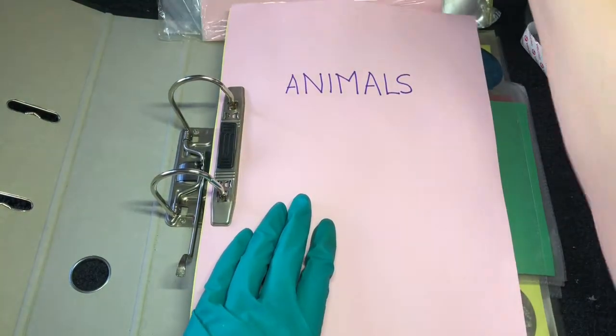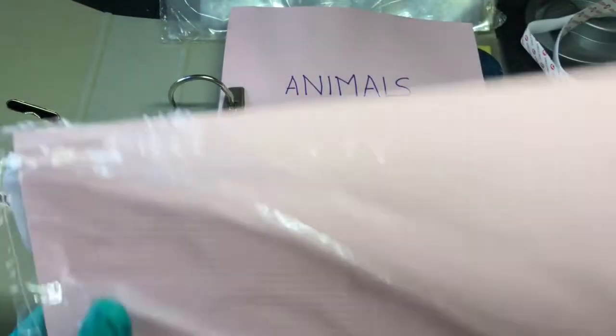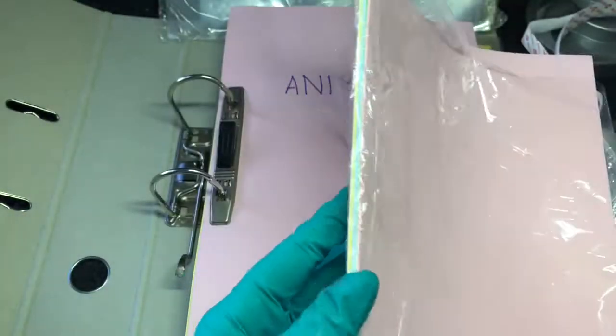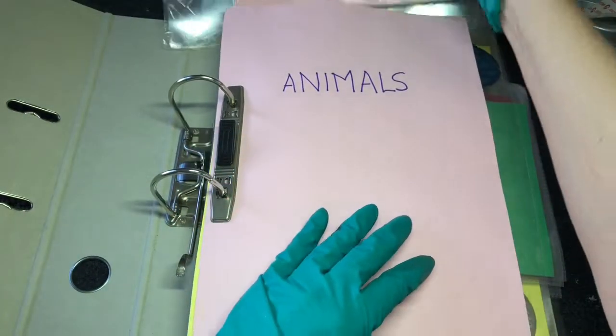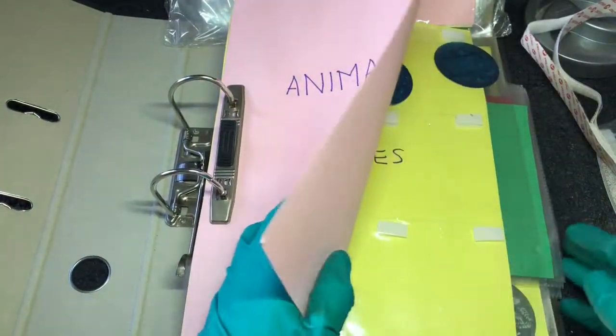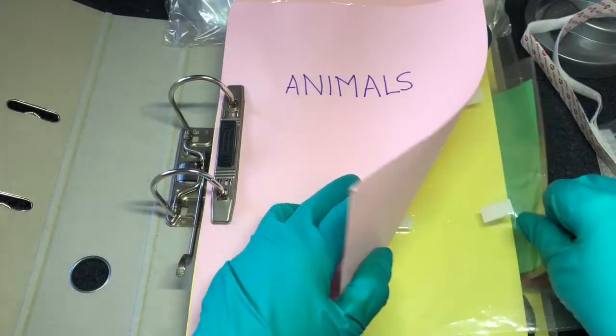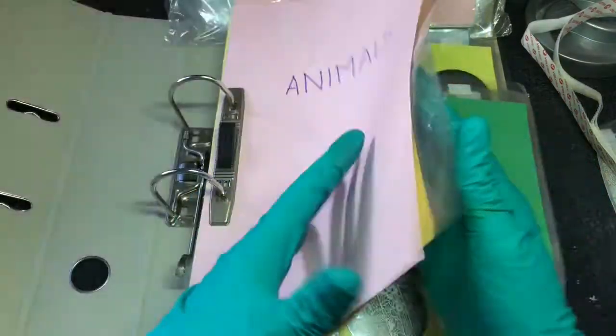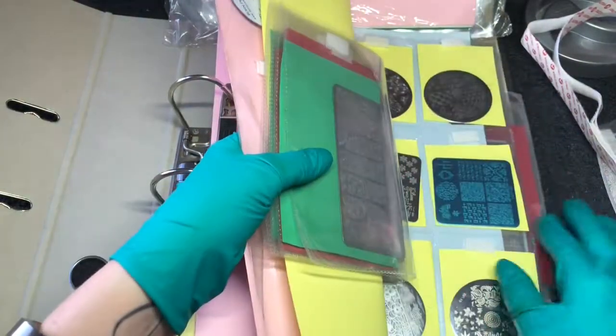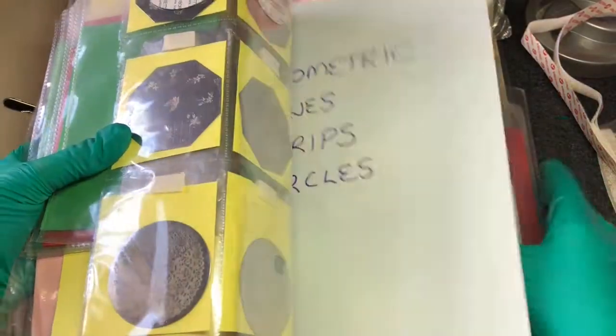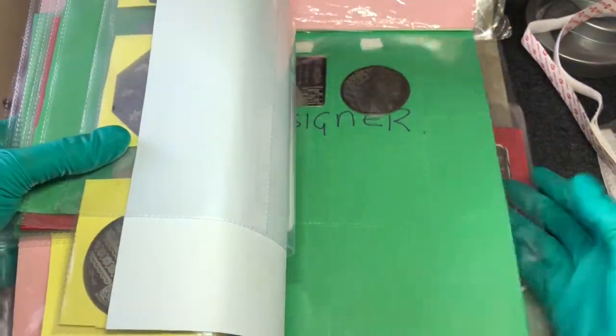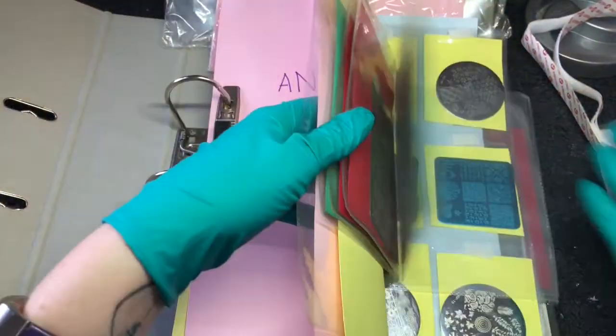What I do is I get some card, just normal card. I get everything off eBay because I don't like going out. I get the assorted colored ones and then I pick one for each section. This one's animals, then I've got flowers, geometric lines, designer seasonal. You could have as many dividers as you want.